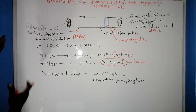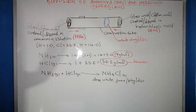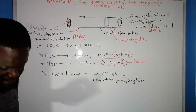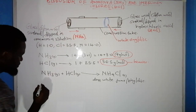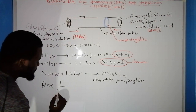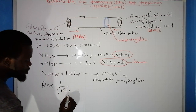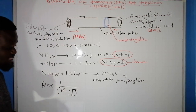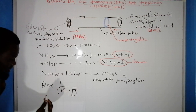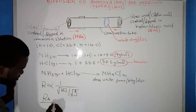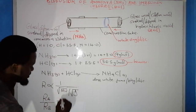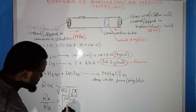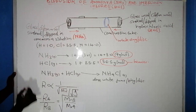This leads us to Graham's law of diffusion. Graham's law states that the rate of diffusion of a gas is inversely proportional to the square root of its molecular mass or density. If we have two gases A and B, the rate of diffusion of gas A divided by the rate of diffusion of gas B equals the square root of the molecular mass of B over the molecular mass of A.